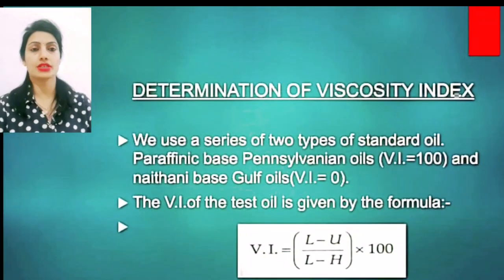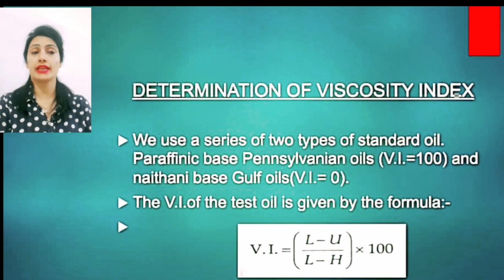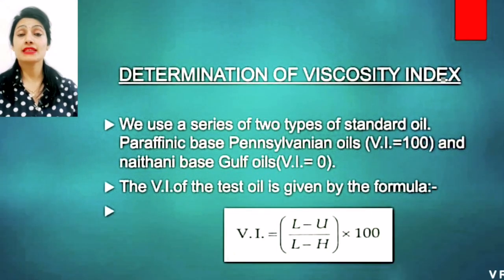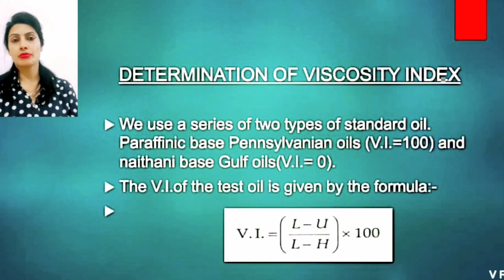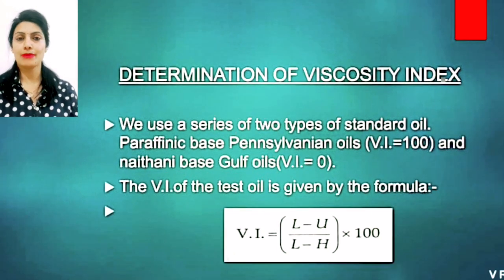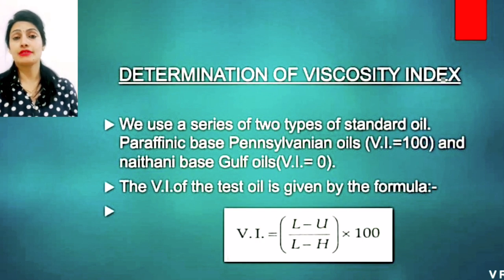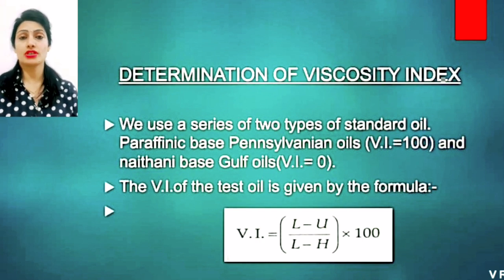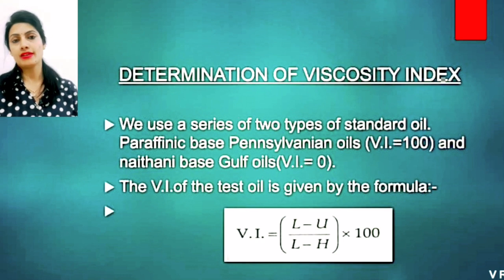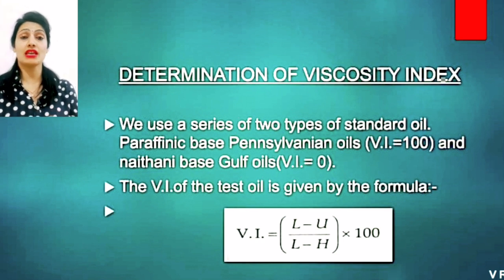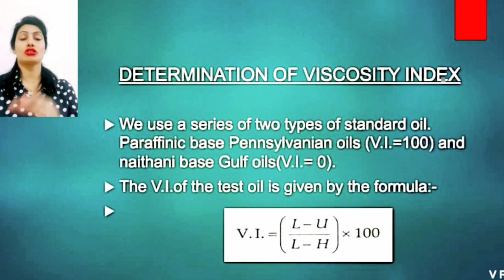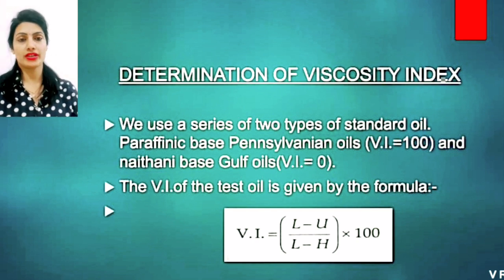Next point: Determination of Viscosity Index. I have told you the definition — that the rate at which viscosity changes with temperature is measured by an arbitrary scale. Now, what is the formula? What is the scale by which we find this out?